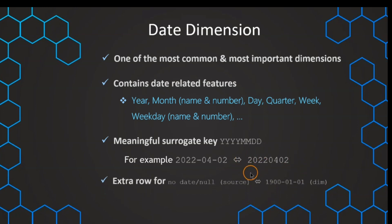The surrogate key for the date dimension is not just a meaningless incrementing number. It is usually a more meaningful key consisting of the year, month, and day in that integer format — for example, 20220402 for the 2nd of April 2022. We also commonly have an extra dummy row representing a placeholder when there is no date value in the fact table.